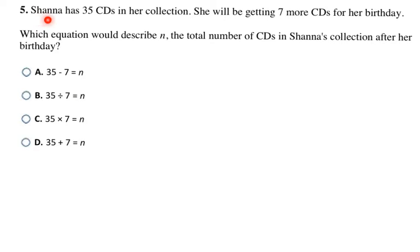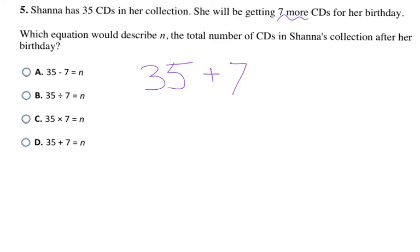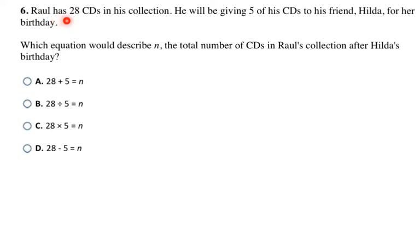Now we're taking a real-life scenario and translating it into an equation. Shauna has 35 CDs and will be getting 7 more for her birthday. Which equation describes n, the total number of CDs after her birthday? She starts with 35, adds 7 more, and that equals her total n. So 35 + 7 = n, making D my final answer.